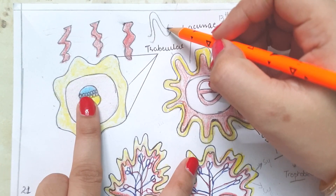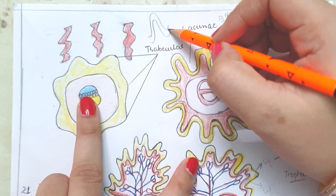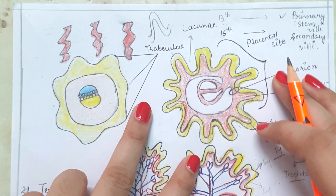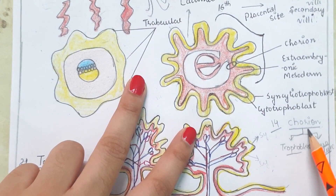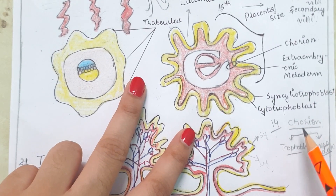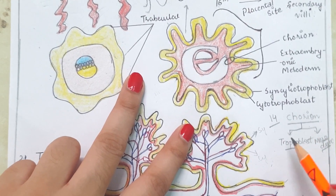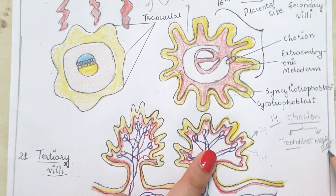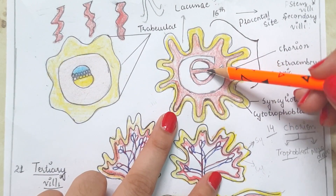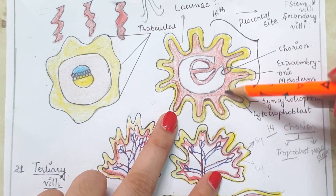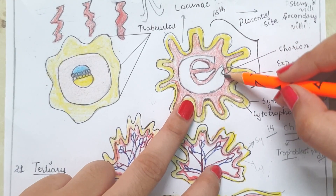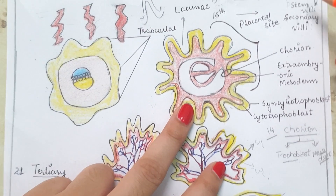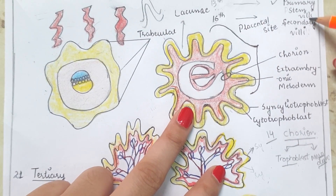The primary stem villi have an outer layer of syncytiotrophoblast cells and are internally lined by cytotrophoblast cells. On the 14th day the chorion develops — consisting of an outer trophoblast layer and an inner mesoderm layer. When the chorion develops, the primary stem villi are then known as chorionic villi.